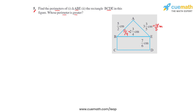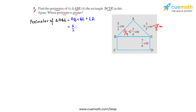Now we find the perimeter of triangle ABE first. The perimeter is the sum of the lengths enclosing the figure — the length of the boundary. So the perimeter of triangle ABE equals AB plus BE plus EA. Substituting the values: AB is 5/2, BE is 11/4, and EA is 18/5.